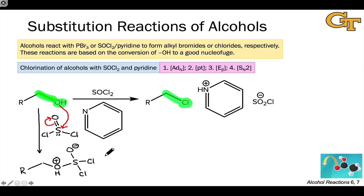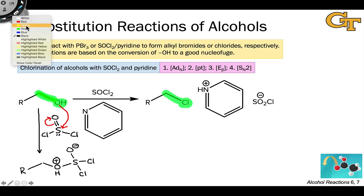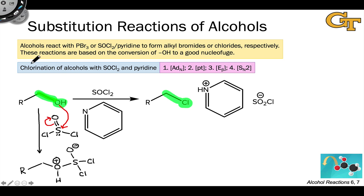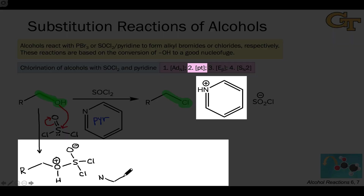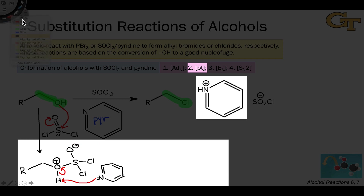In this intermediate, as we saw with PBr3, the oxygen atom is now positively charged. Something a little different happens here, and the role of pyridine becomes apparent. Pyridine — often abbreviated PYR — is a nitrogen-containing analog of benzene, and its role is to deprotonate the positively charged oxygen atom. After this highly favorable proton transfer, the positively charged oxygen is much more acidic than the positively charged nitrogen generated through this process.